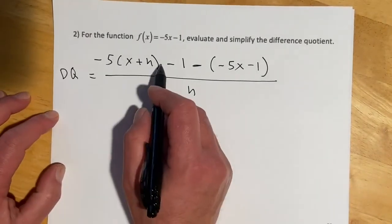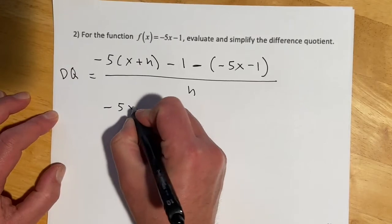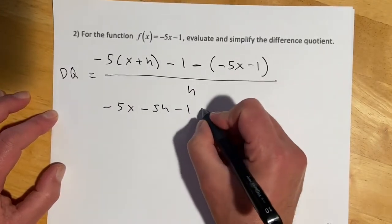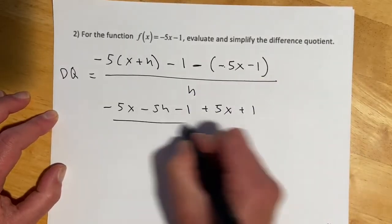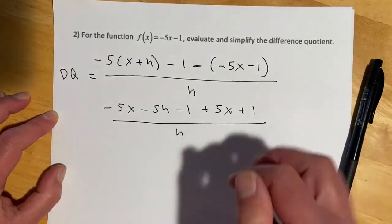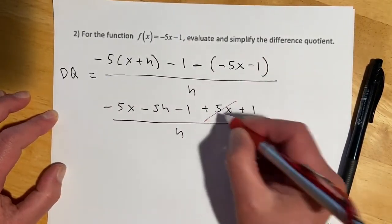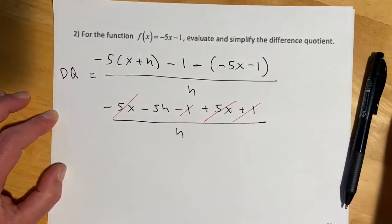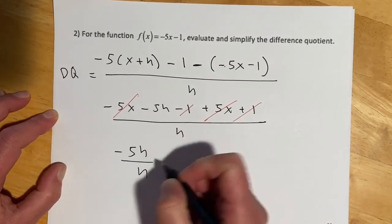So then next, we'll distribute some stuff. So let's go negative 5x, negative 5h minus 1. Minus and minus, that's going to be a plus 5x. Minus and minus again, it's going to be a plus 1 all over h. So then again, if I did this right, all this stuff should cancel. If not, my signs are probably wonky. So plus and minus is good. Plus 1, minus 1 is good.